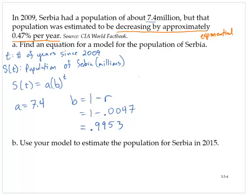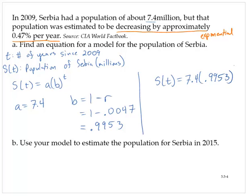So putting that together, I would have s of t is equal to 7.4 times 0.9953 to the t.